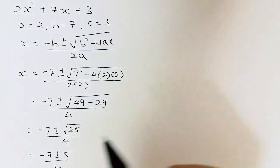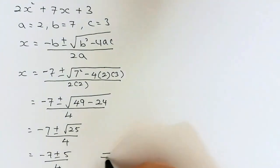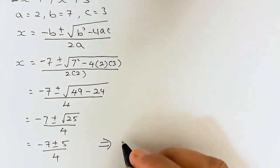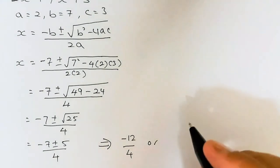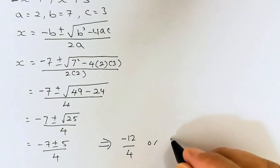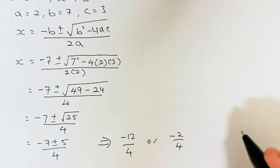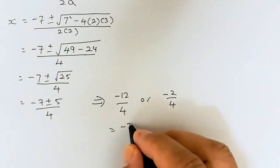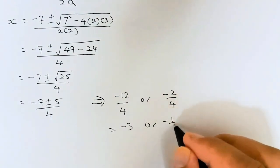So the two answers are: minus 7 minus 5 over 4, which gives minus 12 over 4, or minus 7 plus 5, which gives minus 2 over 4. Simplifying, the answers are minus 3 or minus one half.